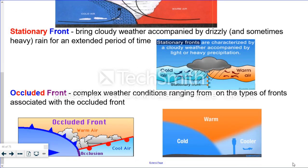And an occluded front is a complex weather condition ranging from all types of fronts associated with the occluded front. So you could have cold air moving in and warm air rising, and the temperature usually gets cold after that. Or you could have had a cold front move in on a warm front and then another one move in right afterwards.